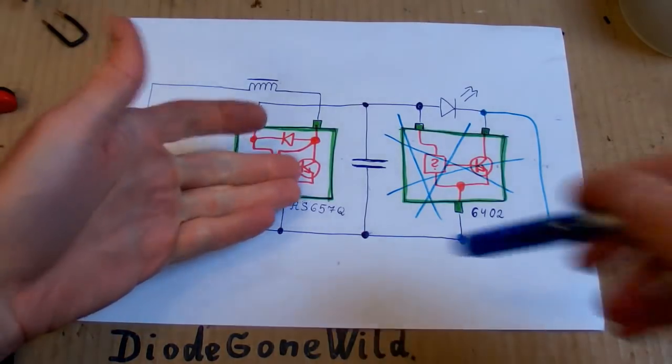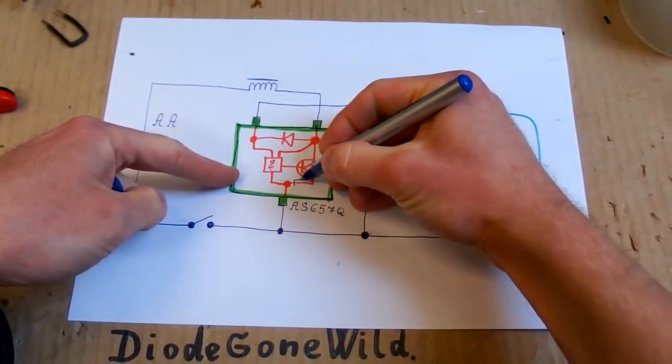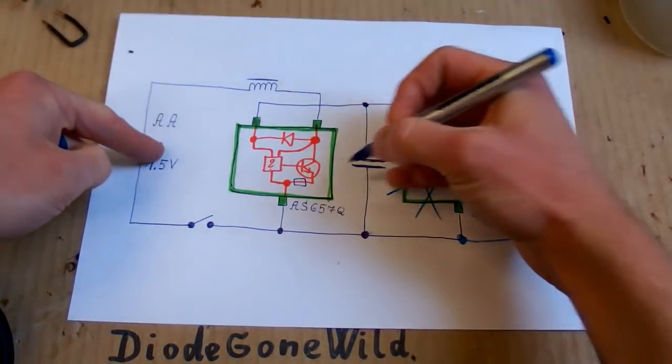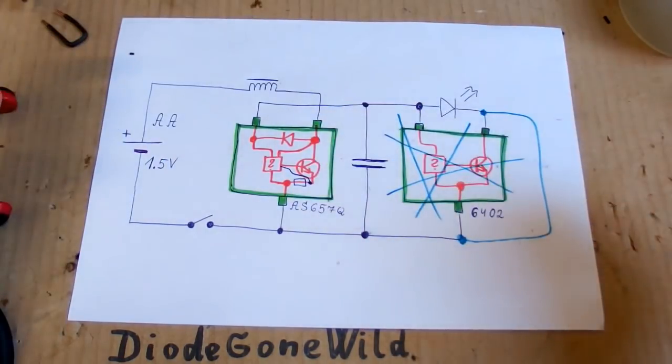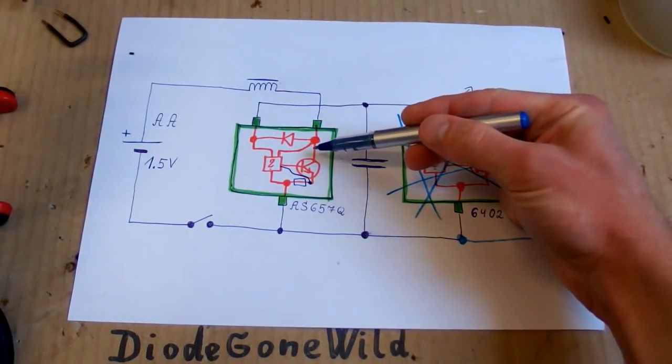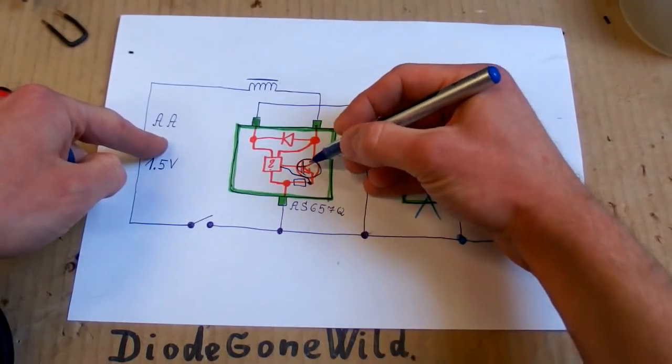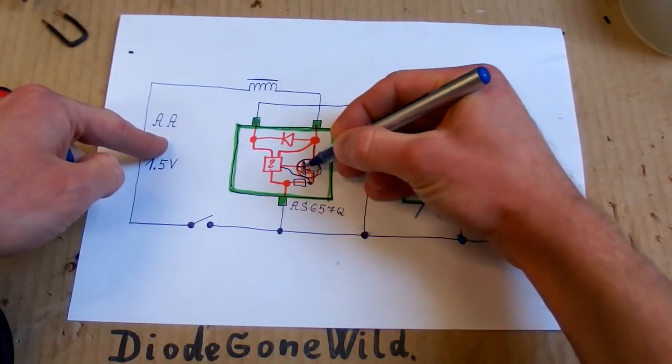It seems like that this chip also contains some current sensing resistor in it, probably here. And the control circuitry senses the voltage drop on it, or maybe it senses the voltage drop on the transistor, which may not be a bipolar transistor but a MOSFET.